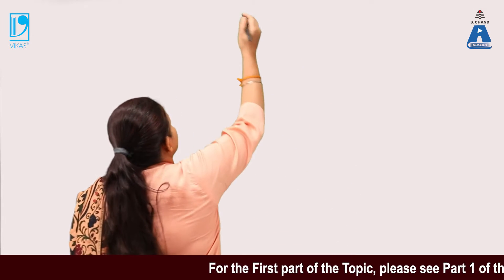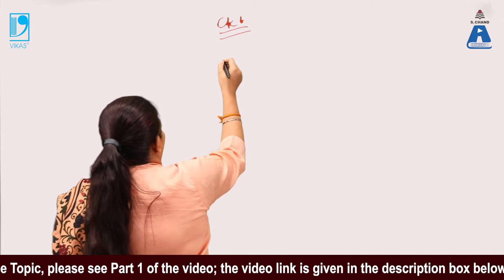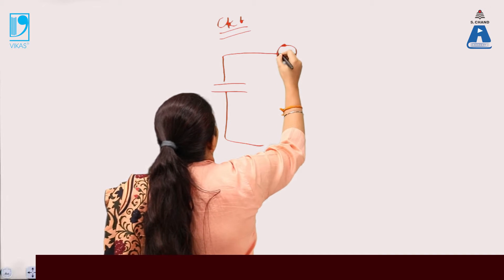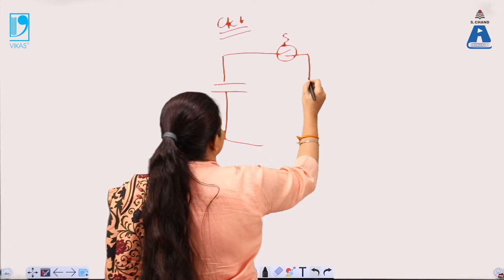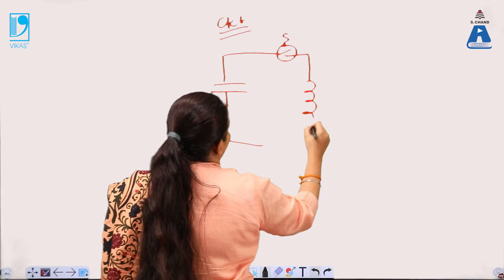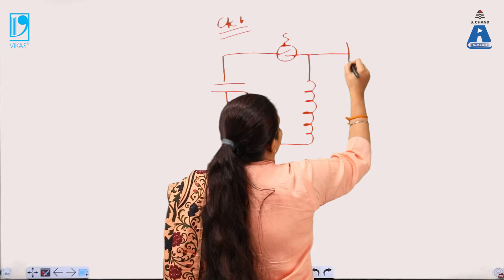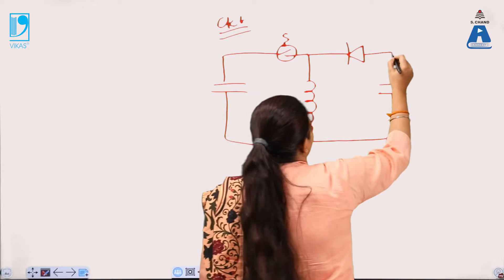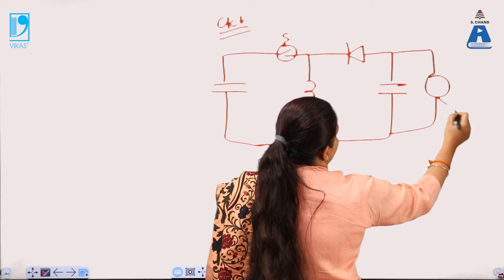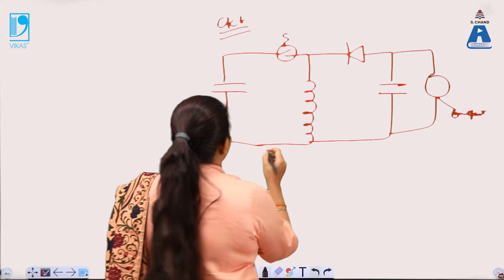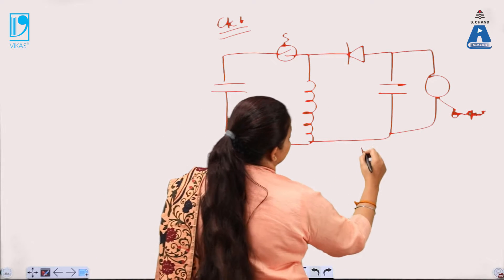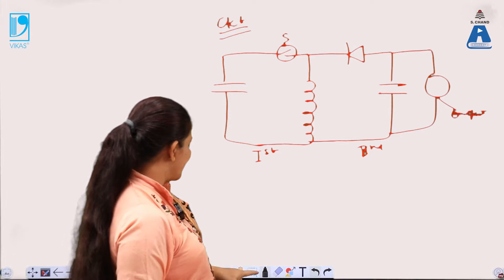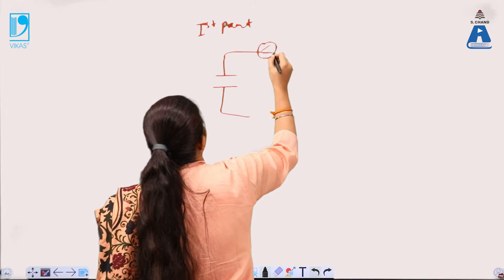Let us begin with the circuit diagram of the DC-DC converter. Here is a switch S, this is the inductor coil — this is the first part. Here is a diode connected to the capacitor — this is the second part, from which we get the output. So the whole circuit is divided into two parts.